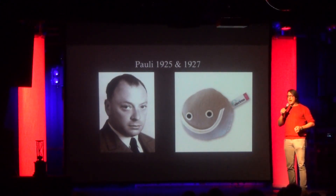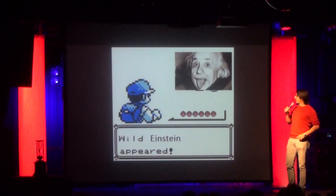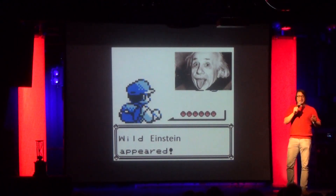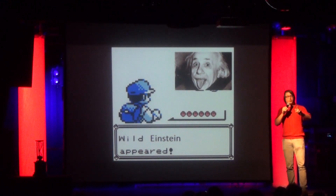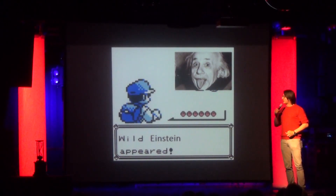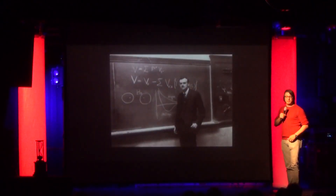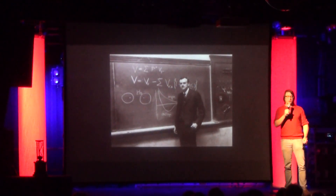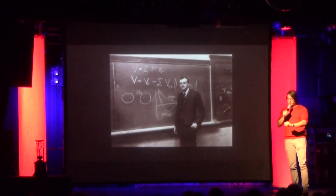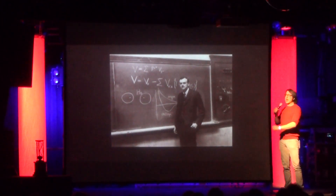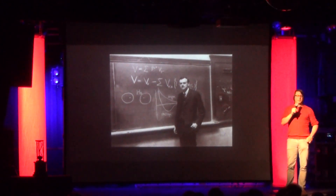So Pauli could describe the electron spin and they were happy, until a wild Einstein appeared. Einstein said there is this universal speed limit and your theory just doesn't obey it. So then along came Dirac, and he wrote down an equation that could derive Pauli's equation and Schrödinger's, and that also satisfied the speed limit.